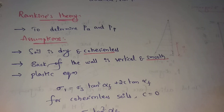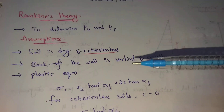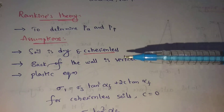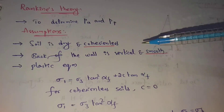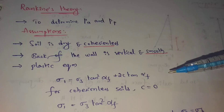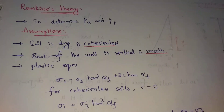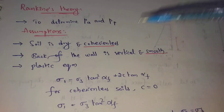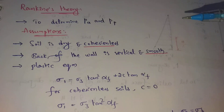Planar means either gentle or inclined. With these assumptions, the plastic equilibrium condition is satisfied. The plastic equilibrium equation is: sigma1 equals sigma3 times tan squared alpha-f plus 2c times tan alpha-f, where sigma1 is the major principal stress and sigma3 is the minor principal stress.